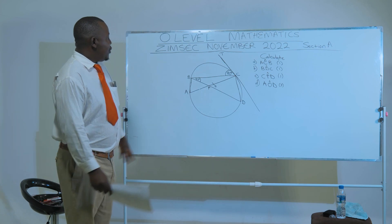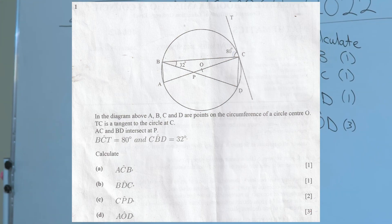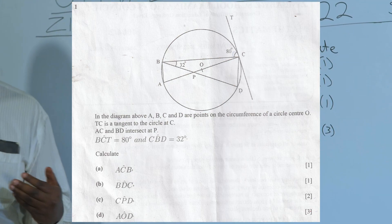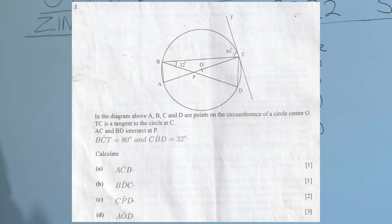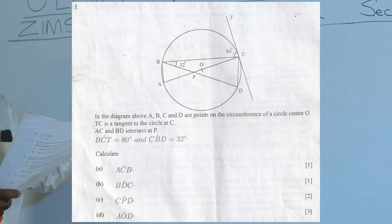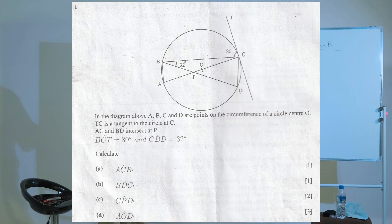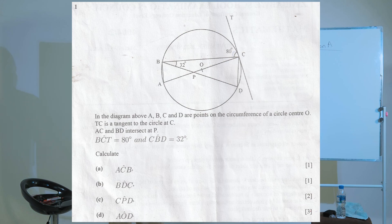On the board, I have a diagram. In the diagram above, A, B, C, and D are points on the circumference of a circle center O. TC is a tangent to the circle at point C. AC and BD intersect at point P.